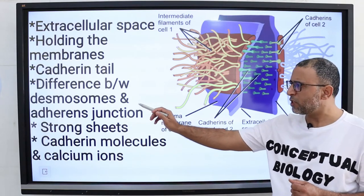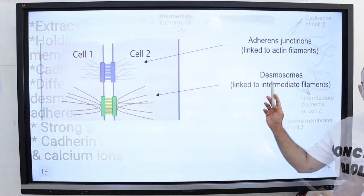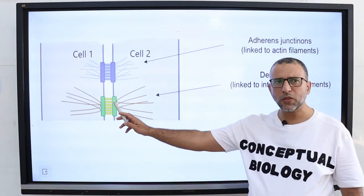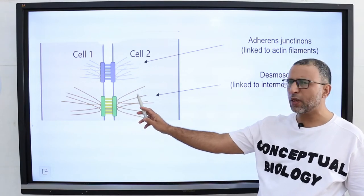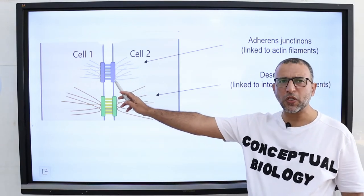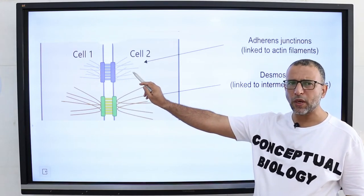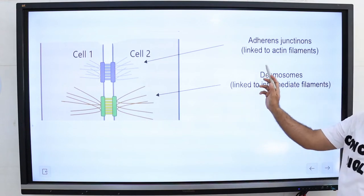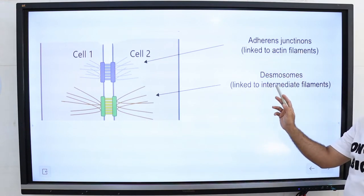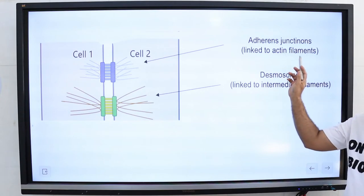What is the difference between adherence junction and desmosomes? In desmosomes, cadherins connect to cytoplasmic intermediate filaments. But in case of adherence junctions, cadherins connect to cytoplasmic actin filaments. So the difference between adherence junctions and desmosomes is intermediate filaments versus actin filaments.